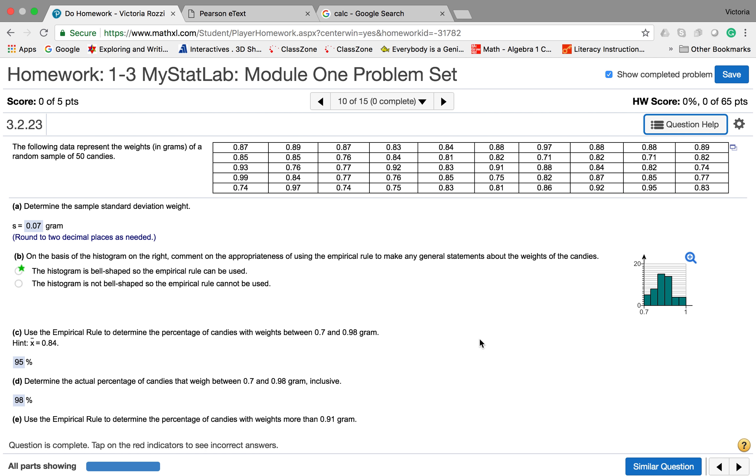This is a video for homework 1, problem 10, and this problem has to do mainly with the empirical rule. We're given the data for 50 candies, and this is their weights in grams.